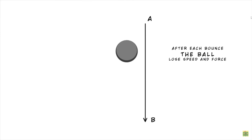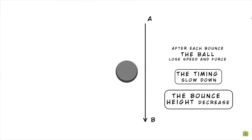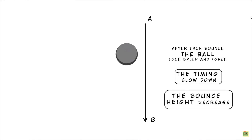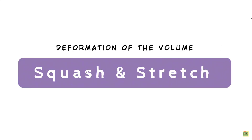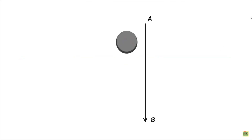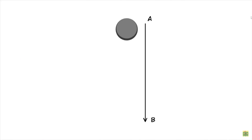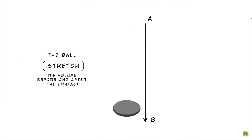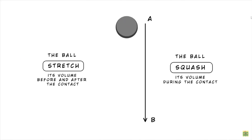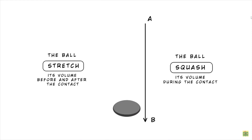Each bounce loses speed and force over time, slowing down the height of the bounce. Another physical phenomenon that happens during the bounces is the deformation of the volume, or squash and stretch. The ball deforms its volume during the bounce — stretching before and after the contact, and squashing during the contact, because gravity pushes the ball against the surface, causing its deformation.